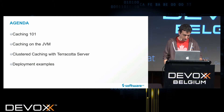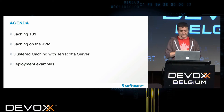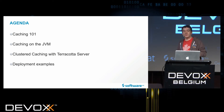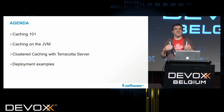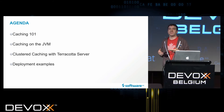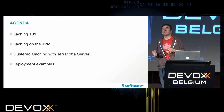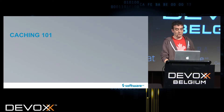So, what about the agenda for this session? First, Caching 101 — I will talk about basic caching concepts, what is important to understand and where you can find caching in the world of computing. Then we'll move on to caching on the JVM, a little bit of history, the specification and the recommended implementation. Then we'll move to clustered caching with the Coda server, and finally deployment examples — real-life deployment examples from customer sites.